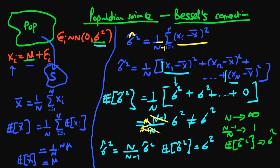In the next video we're going to talk about another way to derive this unintuitive result. I should mention that this factor n/(n−1) by which we multiply σ̃² is known as Bessel's correction, because it corrects our sample variance to account for the fact that σ̃² is a biased estimator of the population variance. In the next video we'll discuss another way to think about the intuition behind this result.